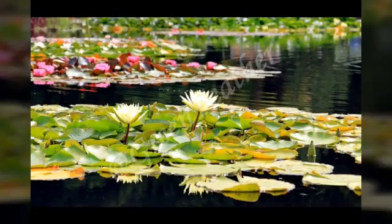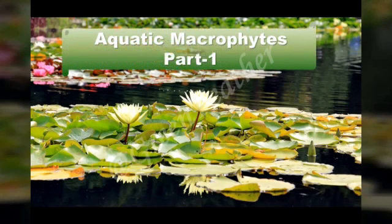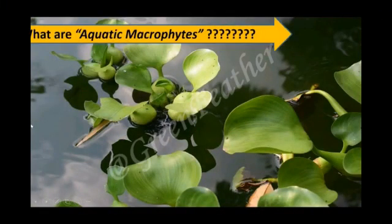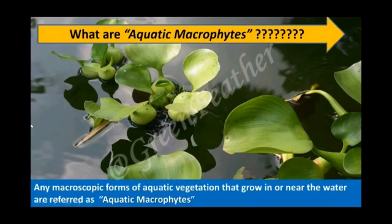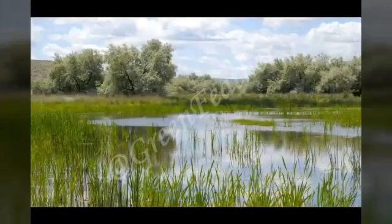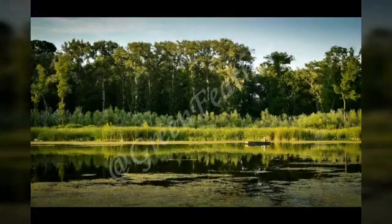Welcome back to Green Feather. In this video we will talk about aquatic macrophytes. Any macroscopic form of aquatic vegetation that grows in or near water is referred to as aquatic macrophytes. These plants are ecologically characterized by the presence of water, which may be fresh, brackish, saline, or eutrophic, and they grow at least part of their life cycle in water, either completely submerged or emerged.